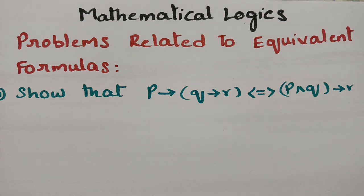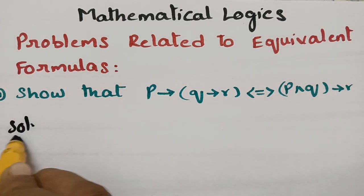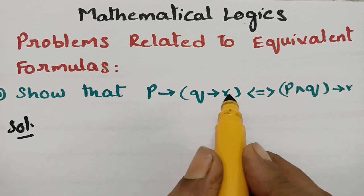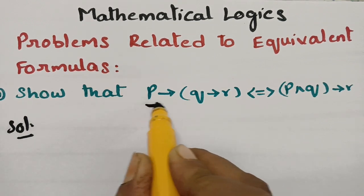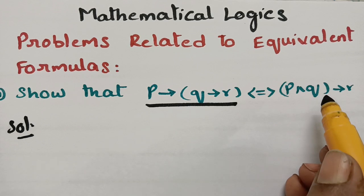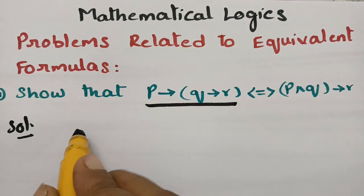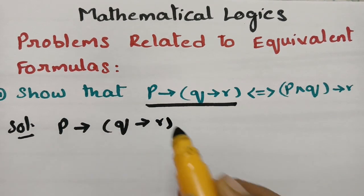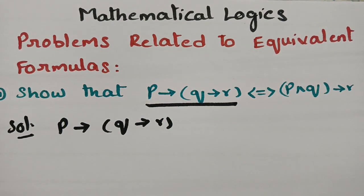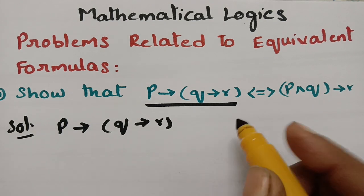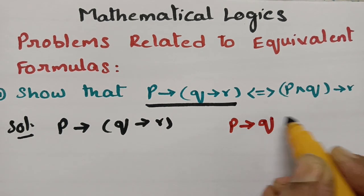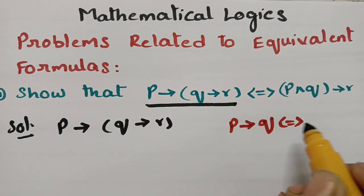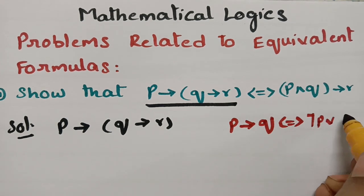These formulas are presented here to make things simplified. We have to take the LHS part, which is P implies (Q implies R), and show it equals the RHS. There is a formula: if P implies Q, that is equivalent to negation P or Q. So instead of the implication, I can write this form.